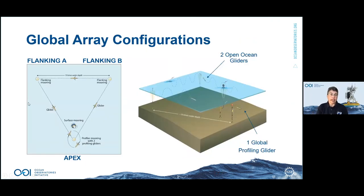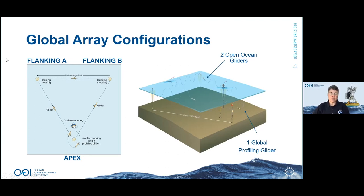The global array has three to four moorings depending on the site: a surface mooring at the apex, a global profiling mooring nearby, and two flanking moorings at the other corners. The sides of this array are approximately 10 times the water depth. Two open ocean gliders swim around the periphery with acoustic communications to collect data from subsurface moorings and transmit it to shore when they surface. There's also a profiling glider near the profiling mooring covering the upper 200 meters.